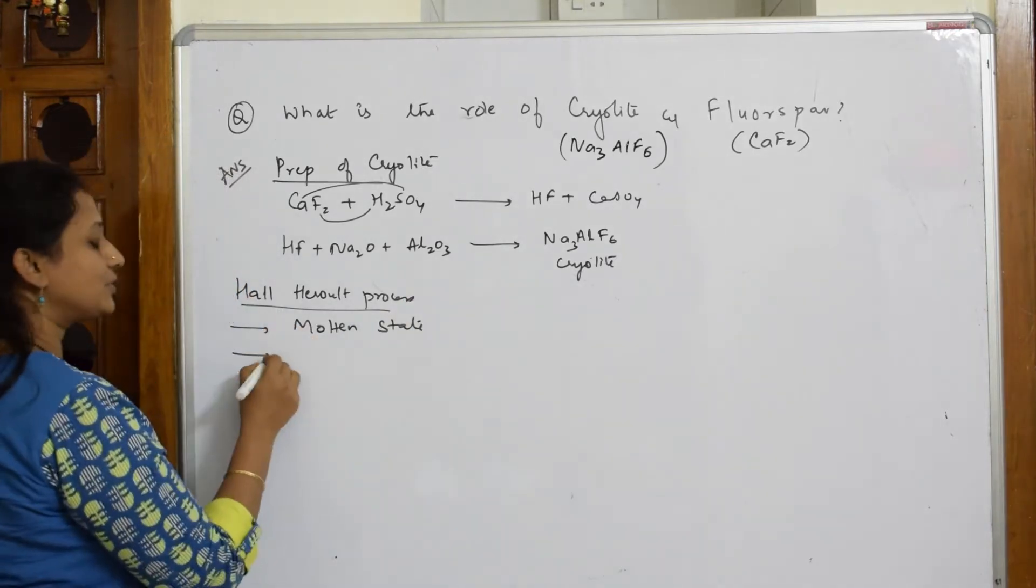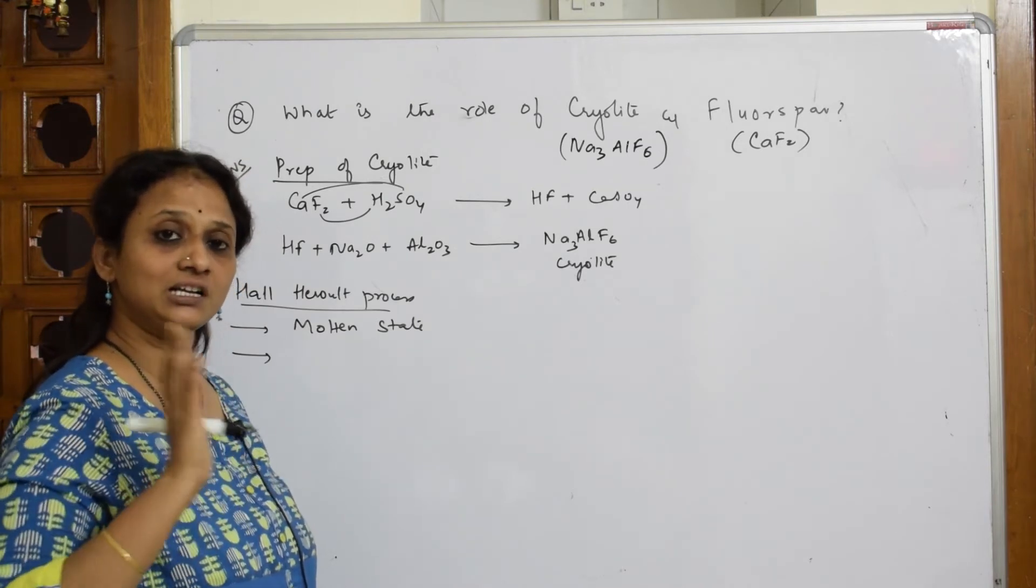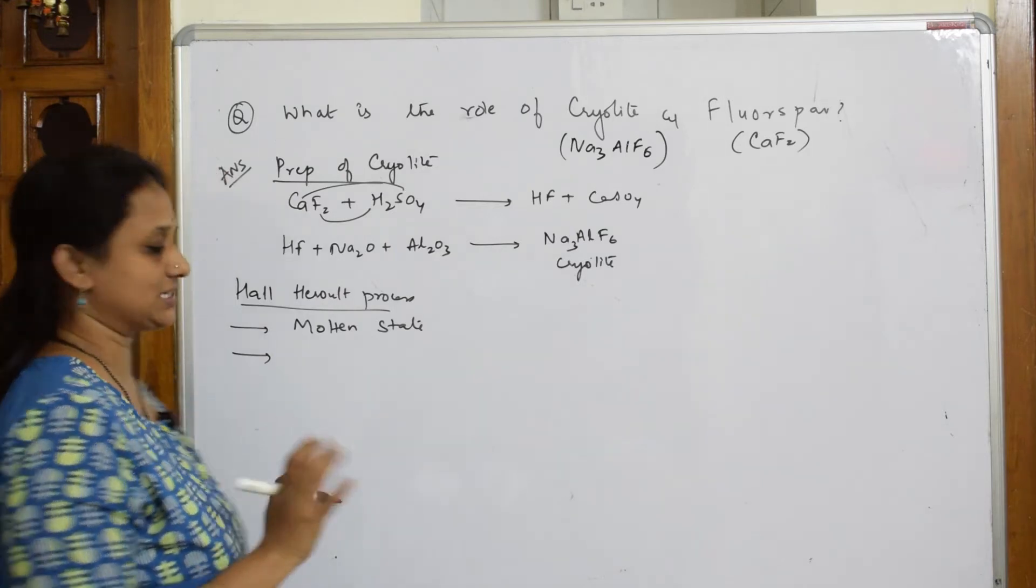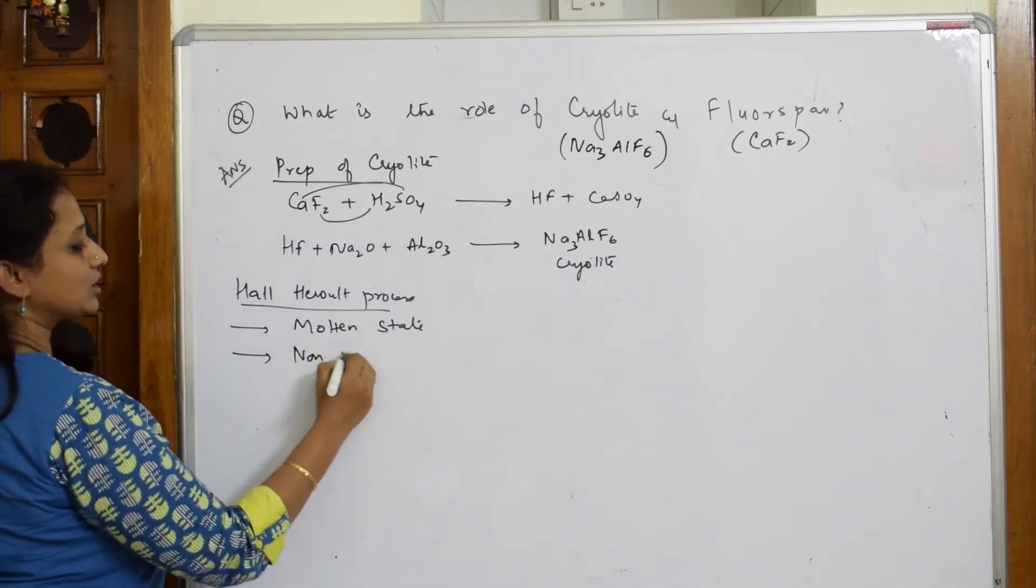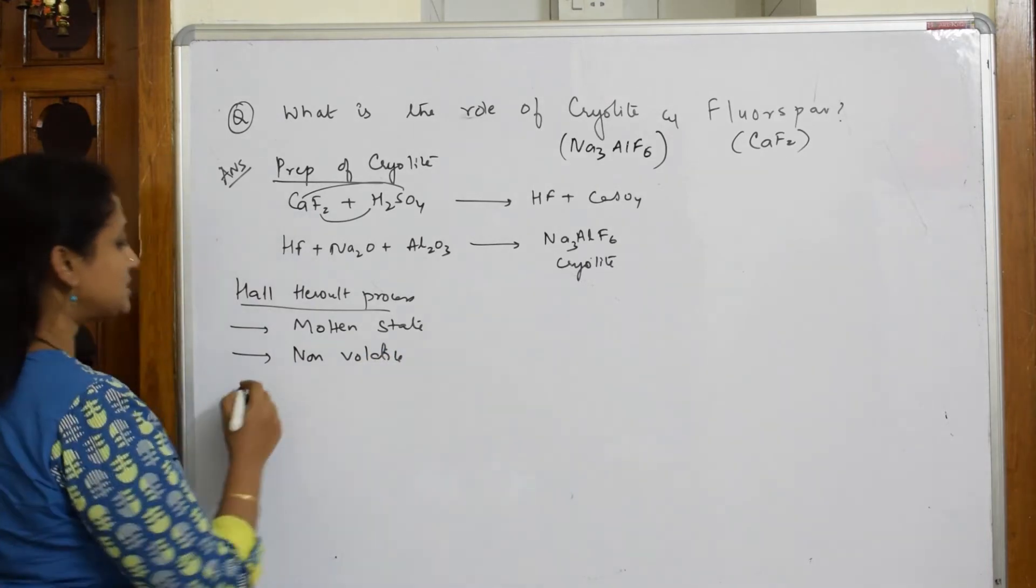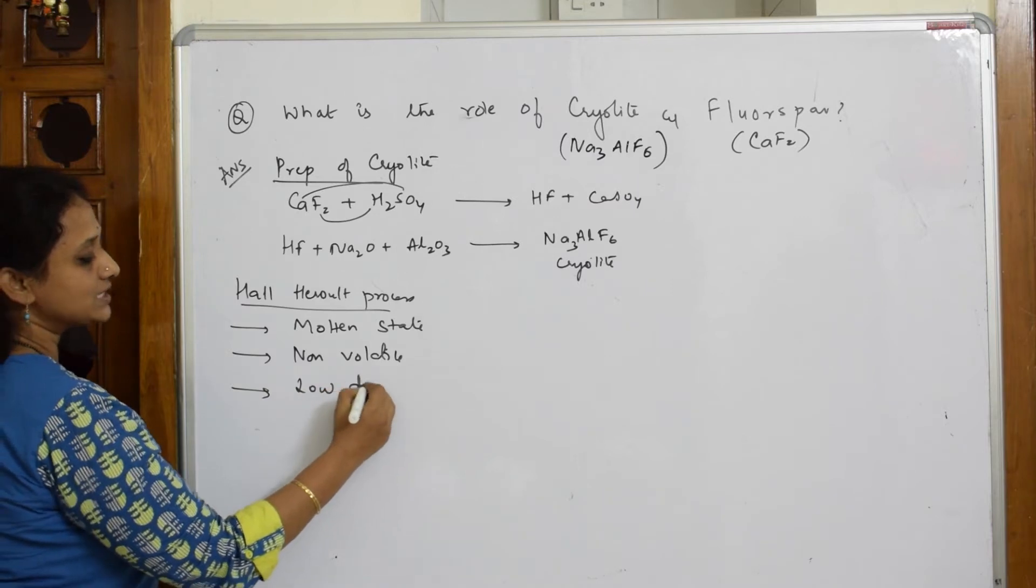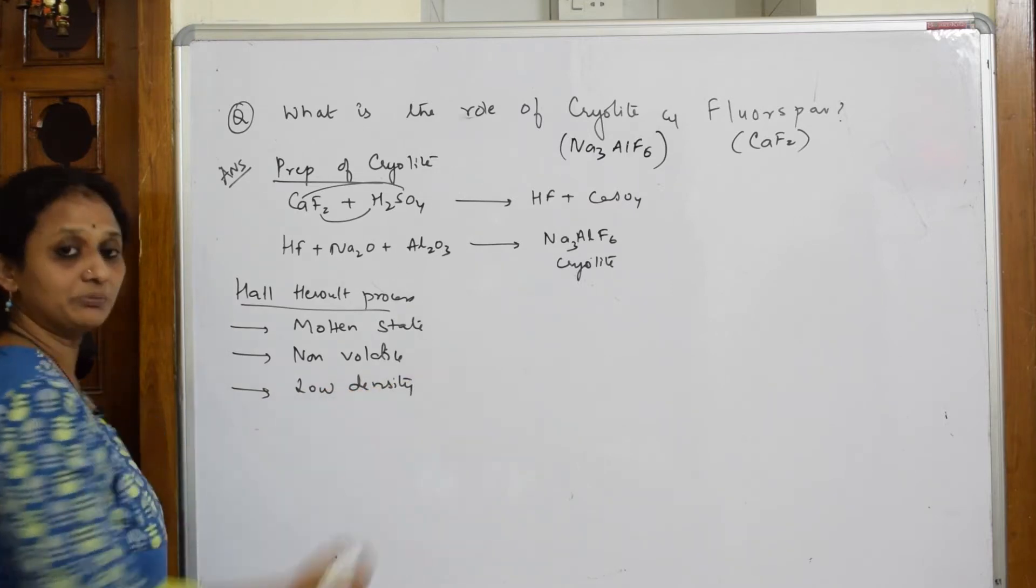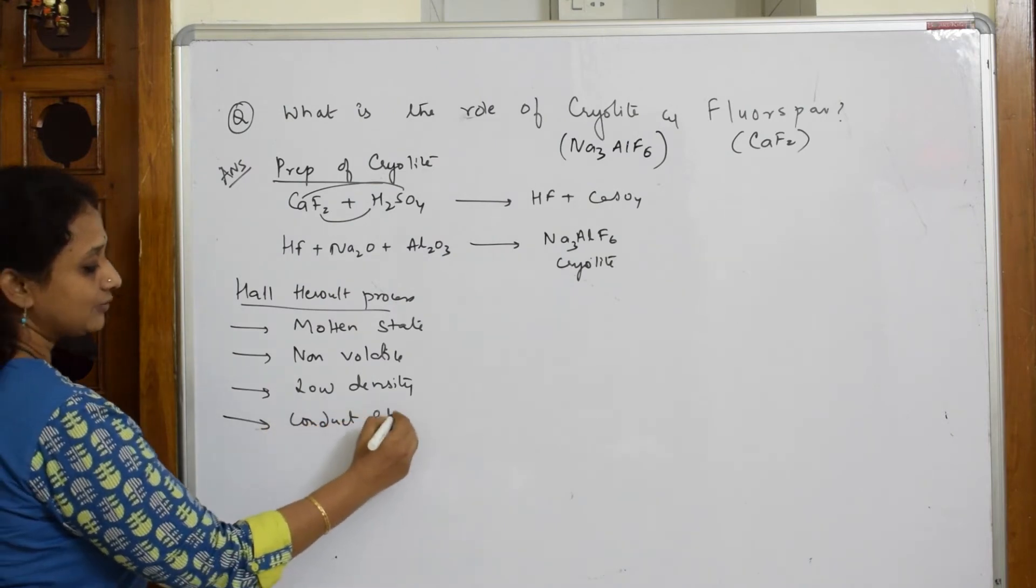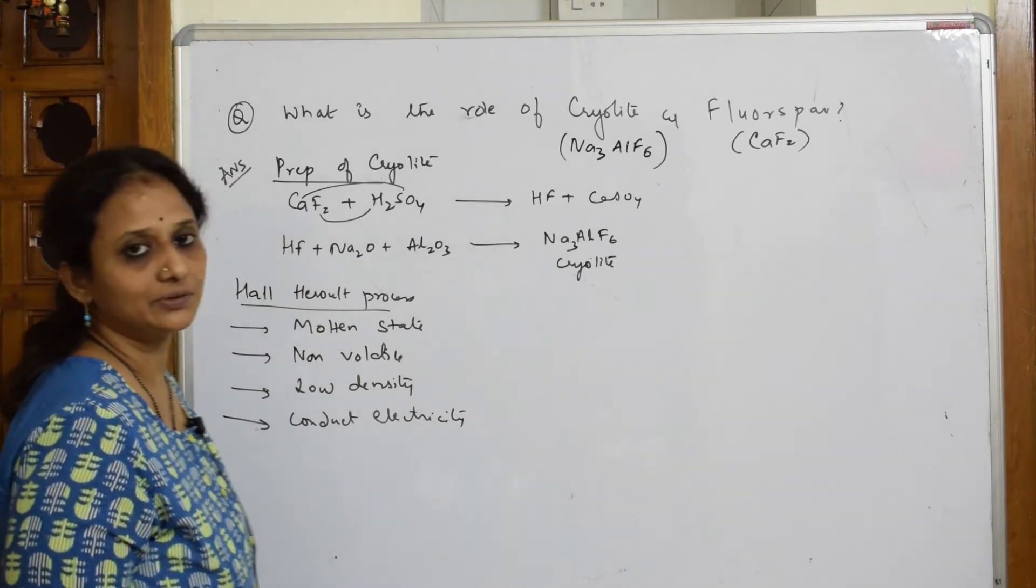Based on these conditions, we are going to add the cryolite. Next important thing, whichever electrolyte you are adding, it should not be volatile immediately as soon as you are heated. It should be non-volatile in the electrolytic cell. Then, only it will stay and perform the reaction. Next important thing, it should be less dense, low density, so it has to float above the metal. Next, it has to conduct electricity.